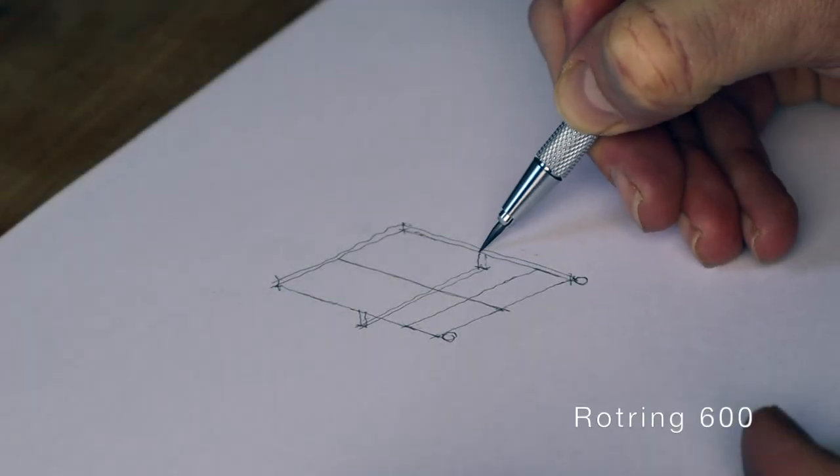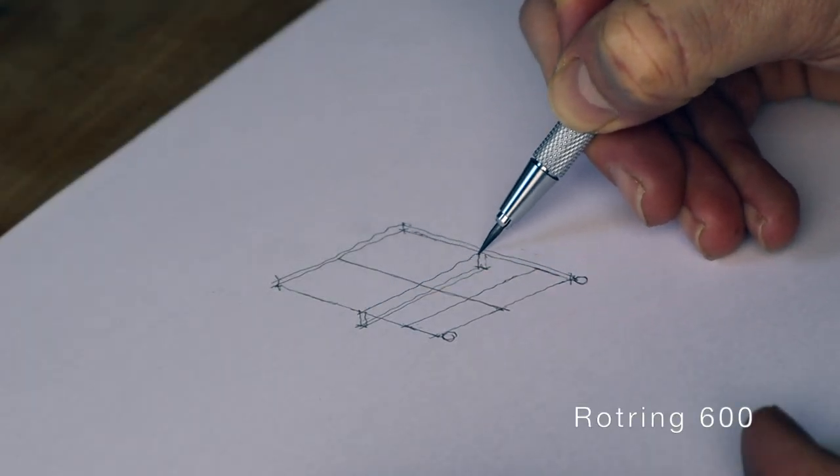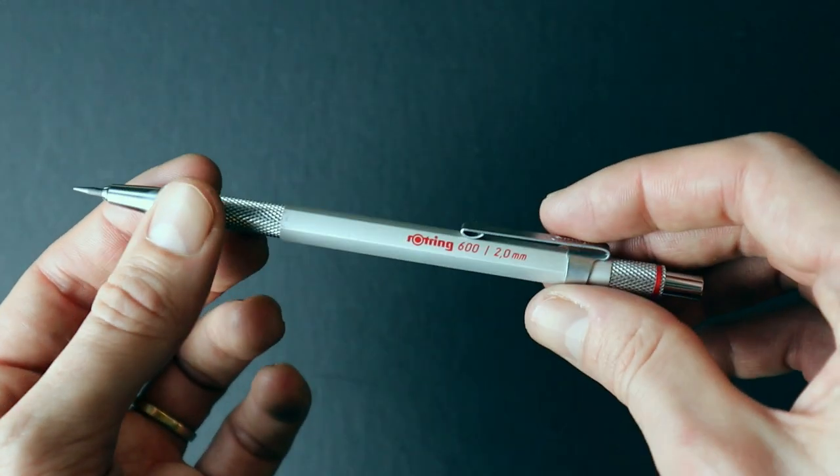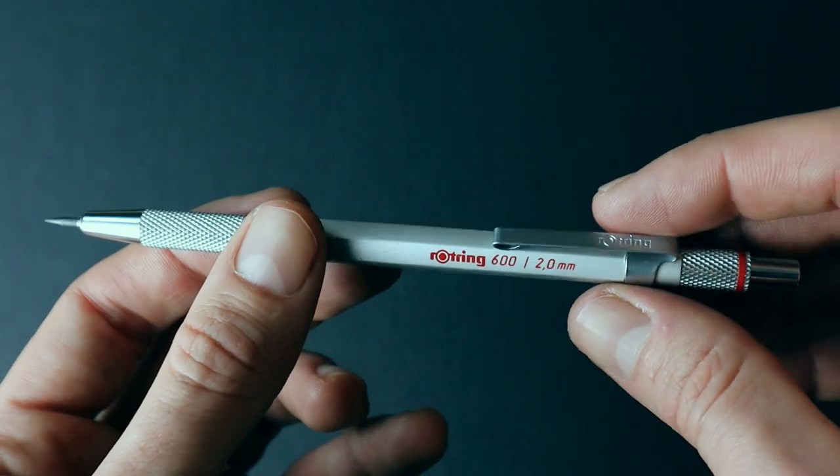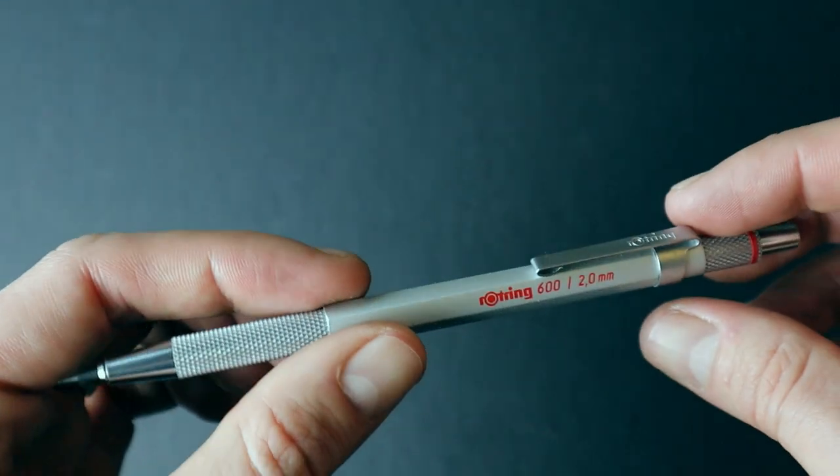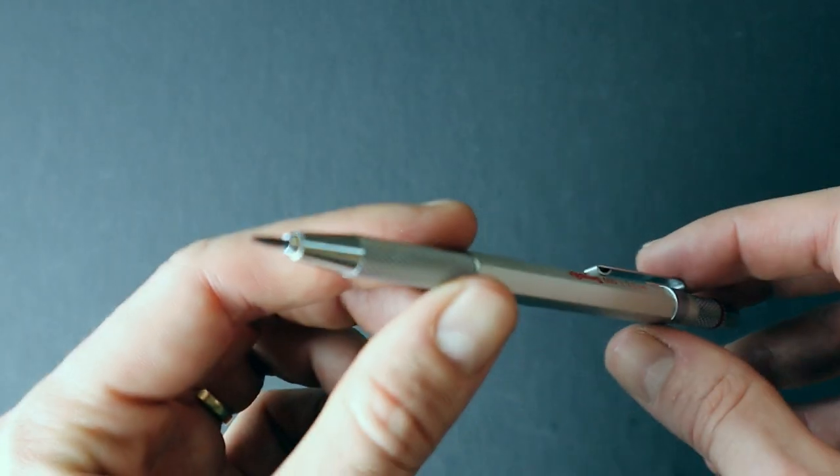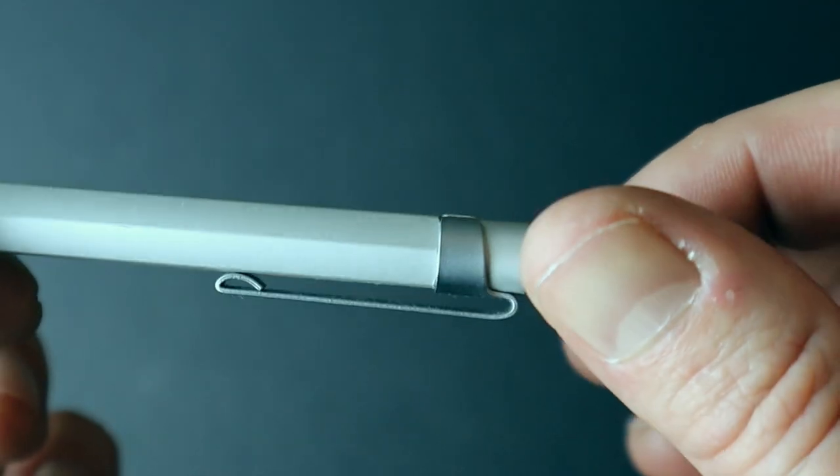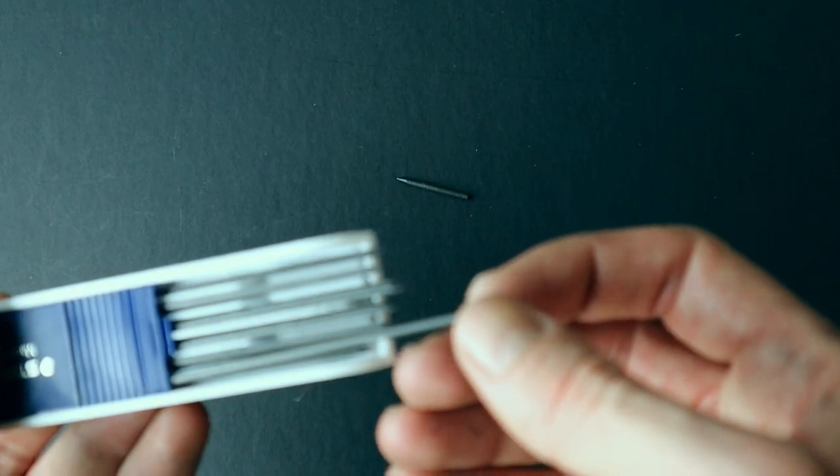The next pencil might actually be my favorite. This is the Rotaring 600. This model has a nice heavy metal hexagonal barrel with a cylindrical knurled grip. I got mine in this matte silver finish, but it's also available in black. It has a removable metal pocket clip and a handy eraser under the push button.